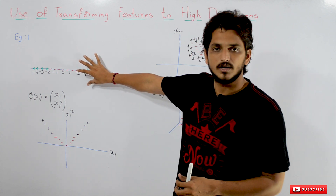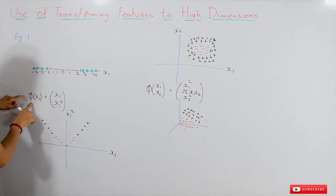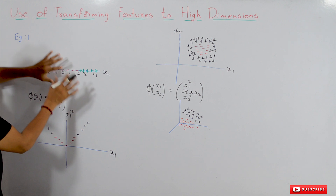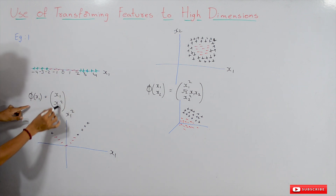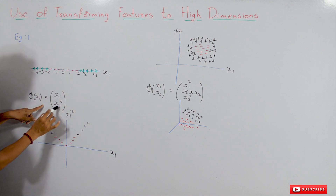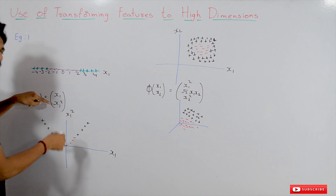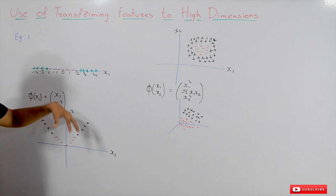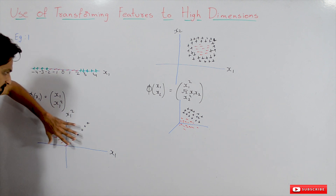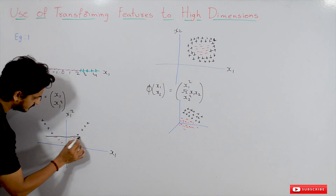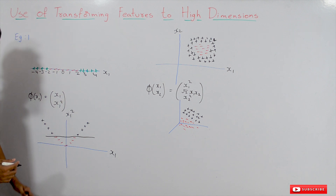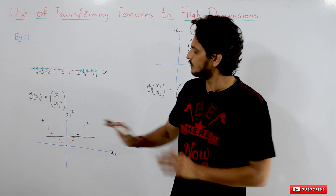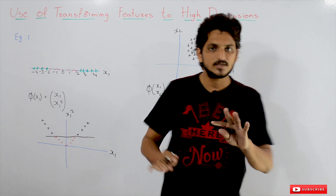What we do here is transform our one-dimensional data into two dimensions. We take a function phi(x1) = [x1, x1²]. We are converting our values into (x1, x1²) — using two dimensions now. We plot this data into a two-dimensional coordinate system with x1 on the x-axis and x1² on the y-axis. Now if we apply support vector machine or logistic regression on this transformed dataset, we can identify a line that separates the positive and negative classes. That's the use of transforming our input features into higher dimensions.